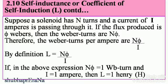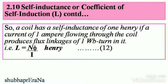By definition, L = Nφ/I. If Nφ equals 1 Weber turn and I equals 1 ampere, then L equals 1 Henry (H). So, a coil has a self-inductance of 1 Henry if a current of 1 ampere flowing through it produces flux linkages of 1 Weber turn. That is, L = Nφ/I Henry. This is Equation 12.